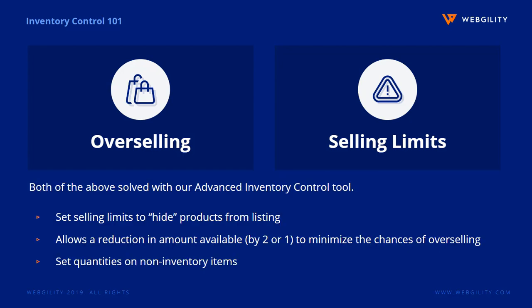Both of these issues are solved by using the Webgility Desktop Advanced Inventory Control Tool. With the tool, you can set limits to stay within your selling limits, create a sales buffer to minimize the chance of overselling, and set quantities on non-inventory items.